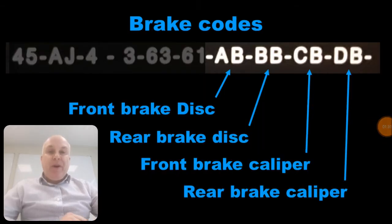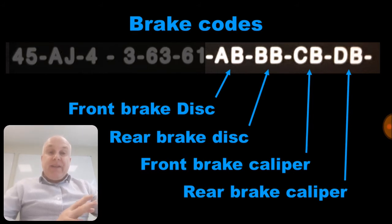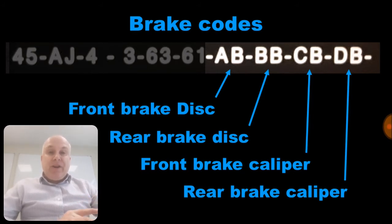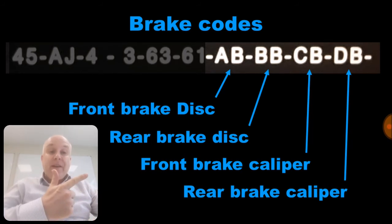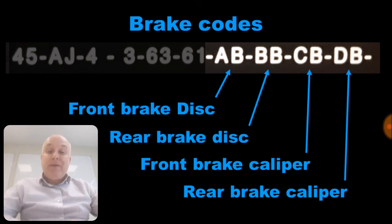Back to the brake codes: of the ten brake and suspension codes, it is the last four alpha pairs which are the brake codes. These codes specify the front and rear brake discs and the front and rear brake calipers respectively.